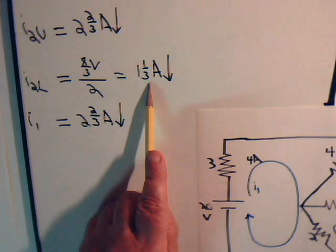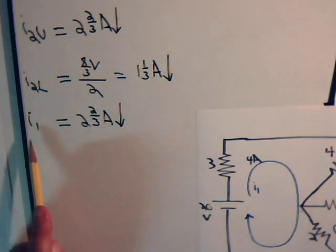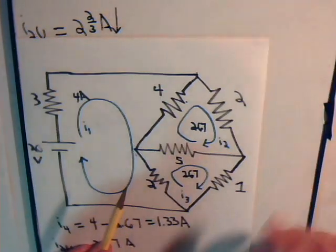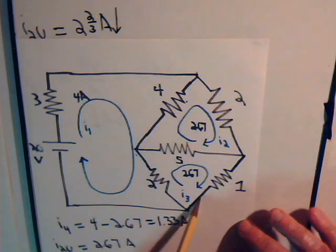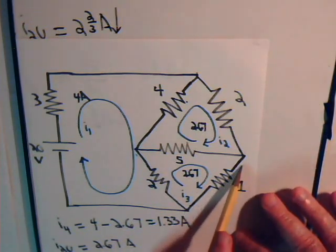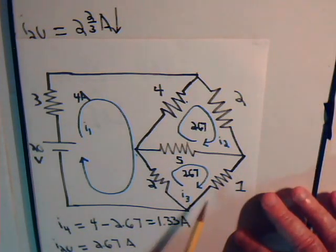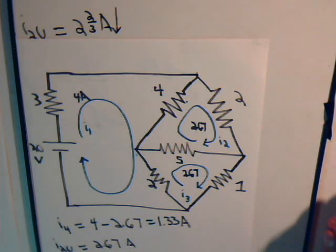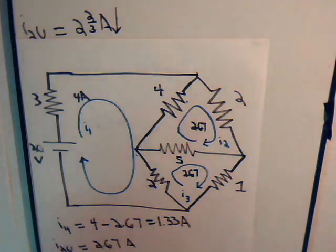Using nodal analysis, we said the current through the remaining resistor was 2 and 2/3 amps, and that agrees here because the only current going through it is mesh current I3 of 2.67 amps. So the different techniques are in complete agreement with each other.